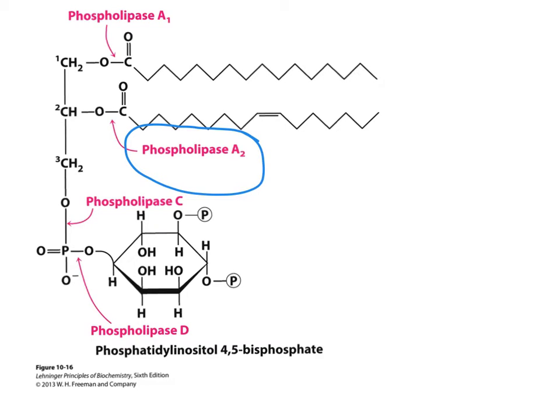The phospholipase we're interested in is phospholipase A2, which cleaves the fatty acid at the 2-position on the glycerol backbone. Unsaturated fatty acids are normally incorporated at the 2-position on glycerol, so it's not surprising that our unsaturated arachidonic acid is bound at the 2-position on the glycerol backbone.